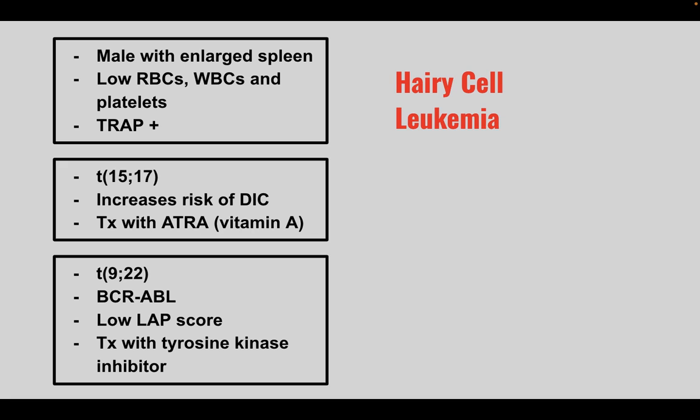Next is translocation 15;17. These patients have an increased risk of DIC and you treat it with all-trans retinoic acid. This is AML (acute promyelocytic leukemia).